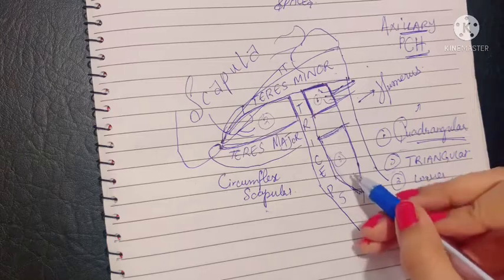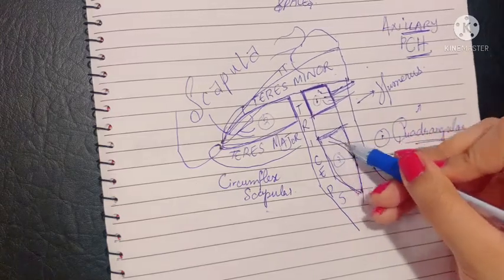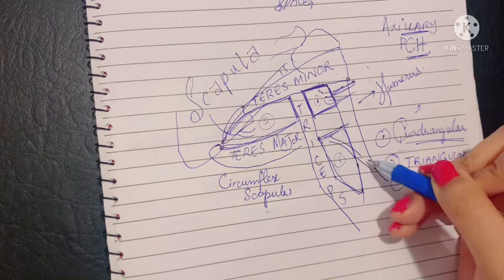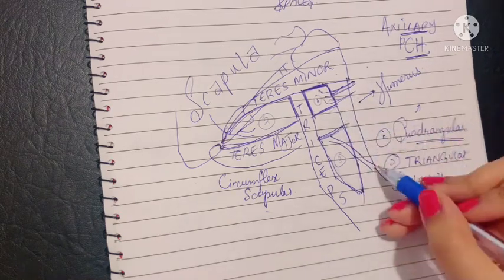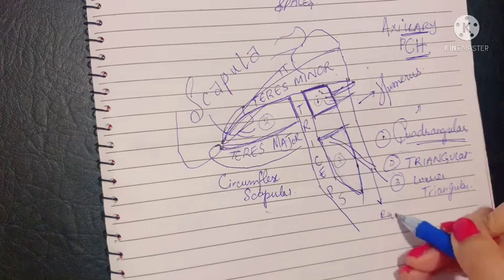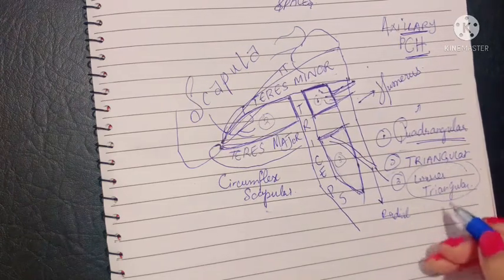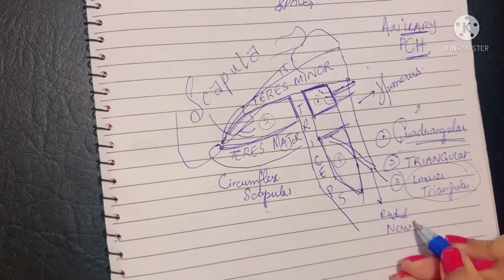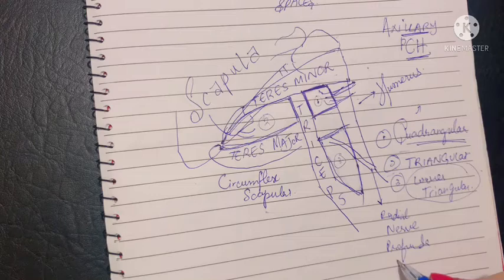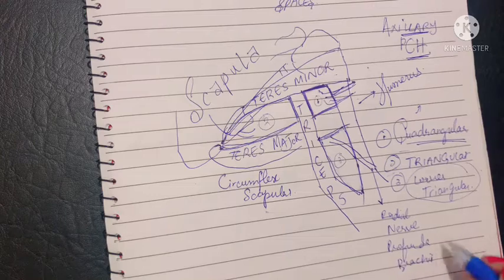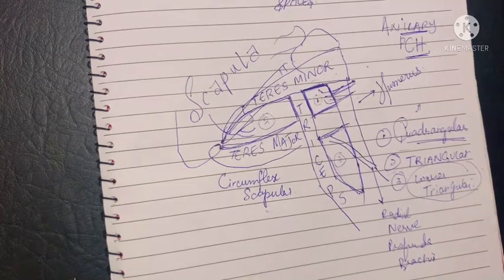Finally, the lower triangular space contains structures that go around the spiral groove or radial groove of the humerus shaft — the radial nerve and accompanying it, the profunda brachii artery. These are the contents of the lower triangular space. Thank you so much for watching.